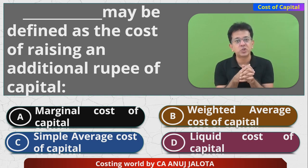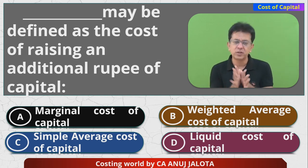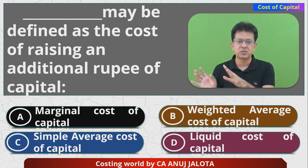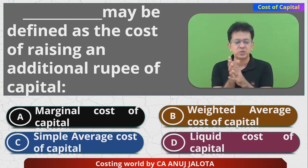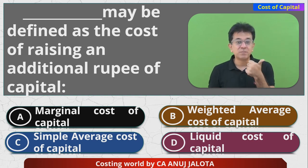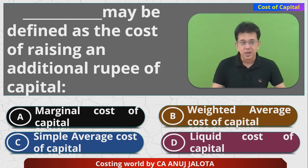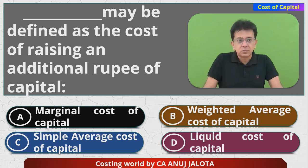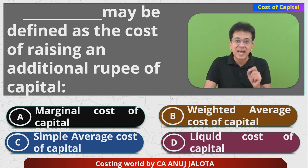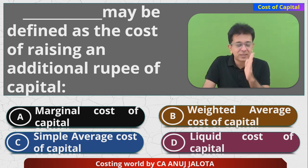When finding the weighted average, there is one problem — should we use book value weights or market value weights? So there are two types of people: some say book value, some say market value. Option C, simple average cost of capital, is a meaningless concept. Similarly, option D, liquid cost of capital, is not a valid concept either.